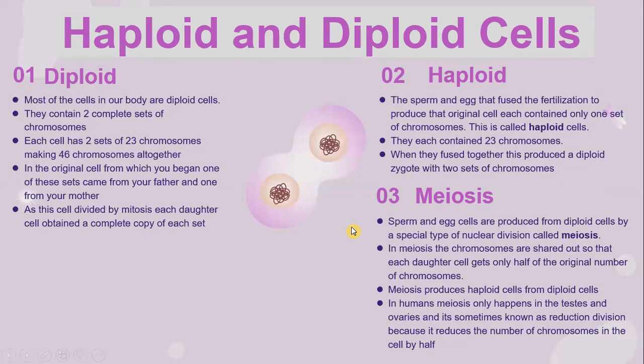Let's look into haploid and diploid cells. Most of the cells in our body are diploid cells, which contain two complete sets of chromosomes. Each cell has two sets of 23 chromosomes, making 46 chromosomes altogether. In the original cell from which you began, one of these sets came from your father and one from your mother. As these cells divided by mitosis, each daughter cell obtained a complete copy of each chromosome.